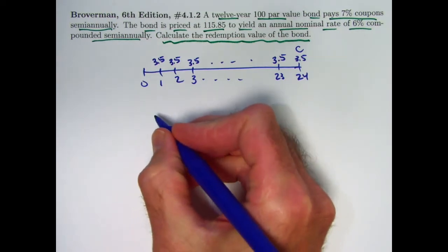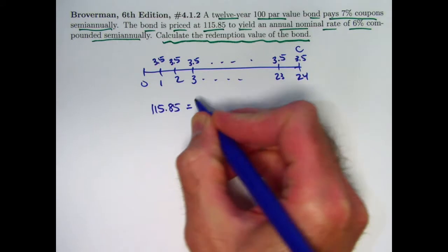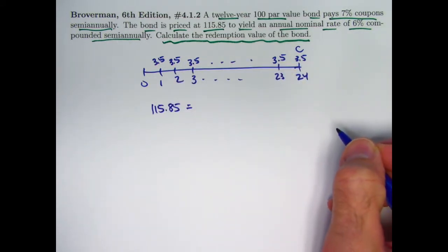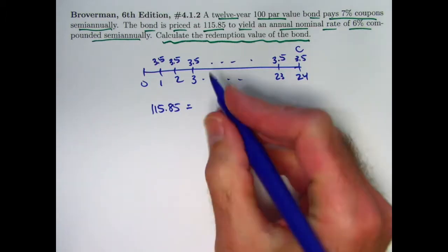We can set up our equation of value. The price, $115.85, is going to be the present value of all these payments, these coupons, which are essentially the entity paying you interest along the way.